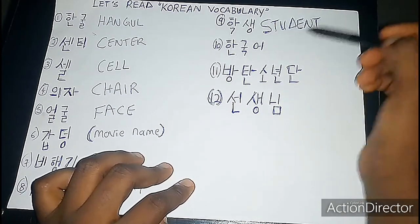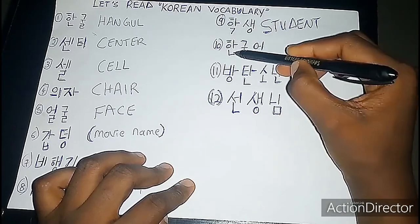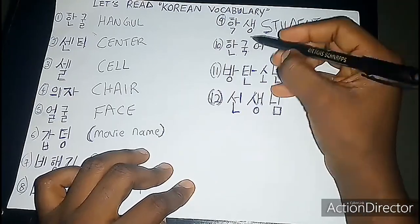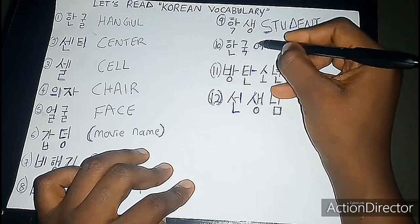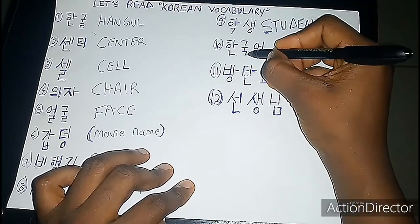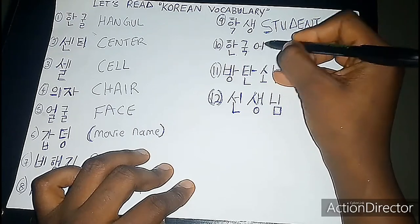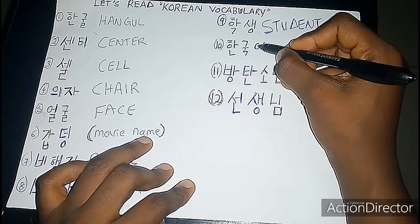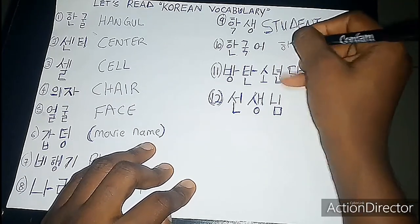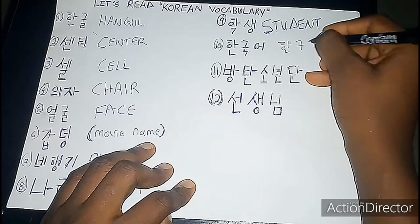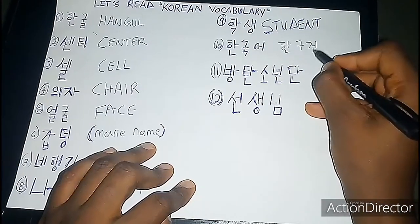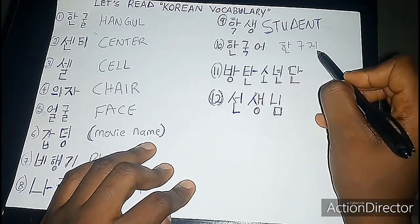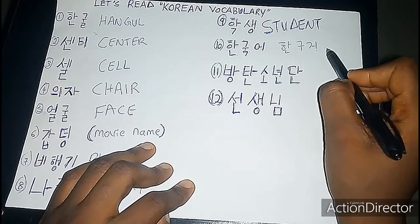Now this next one is 한국어 — hangugeo. You might want to pronounce it 'han-gu-go,' but that's not right. When you see a syllable ending in a consonant followed by a character with no phonetic value, you transfer that ending consonant to the next syllable. So it becomes hangugeo — not han-gu-go, but hangugeo. This is the word for the Korean language.